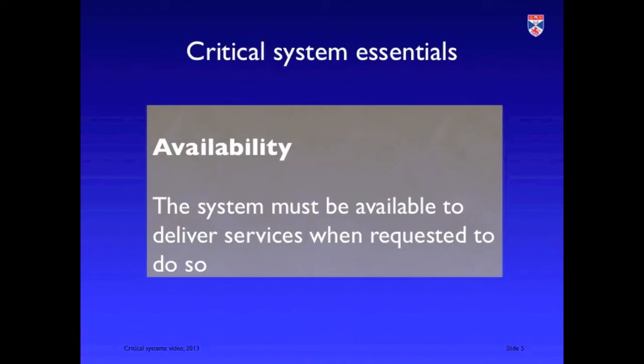Availability is whether or not the system is up and running as expected to deliver its services. The system needs to be working — there's no point in it being stopped. Availability takes into account not just whether or not the system is operational, but also the repair time when it goes down.